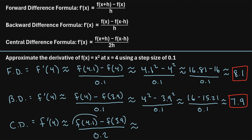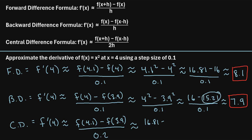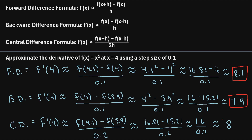We already calculated f of 4.1, which was 16.81, and f of 3.9, which was 15.21. So we have 16.81 minus 15.21 divided by 0.2. In the numerator, this simplifies to 1.6, and in the denominator we have 0.2. So 1.6 divided by 0.2 comes out to exactly 8. Under the central difference formula, we estimate that the derivative of f of x at x equals 4 is equal to 8.